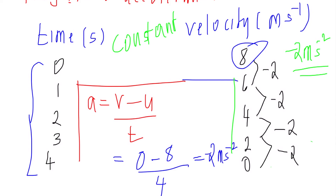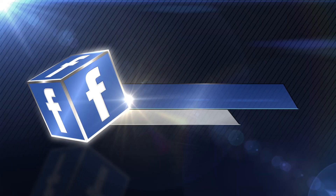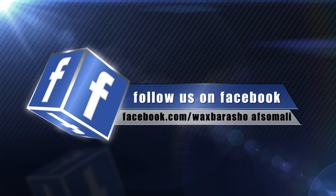The other example is constant acceleration. Negative 2 is the same magnitude as positive 2. The formula uses final velocity, initial velocity, and time. A negative answer means negative acceleration; a positive answer means positive acceleration.